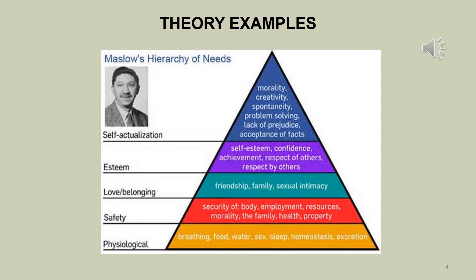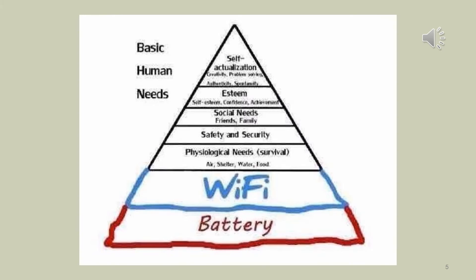So if you don't have basic physiological needs such as food and water, you are going to be more concerned about those than safety or security. But once you get those things, you're then going to start thinking about family, health, property, and so on. Love and belonging, esteem — these things all build on the other parts of this pyramid. Some people have modified the basic human needs to include the need for a battery and wi-fi in order to even get to the point where we need physiological needs.